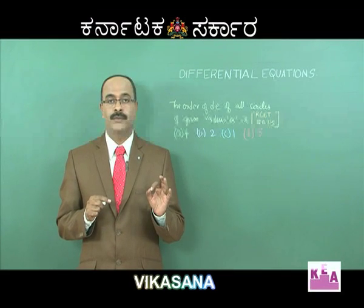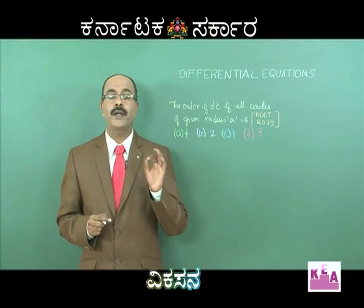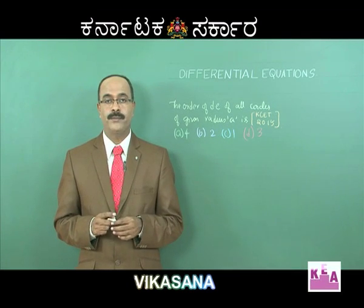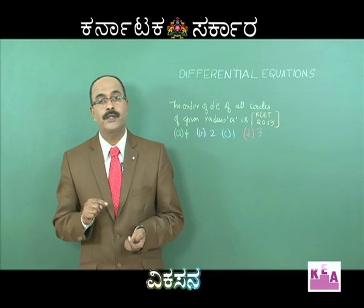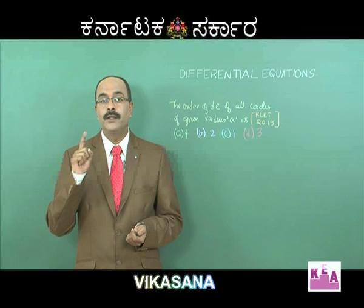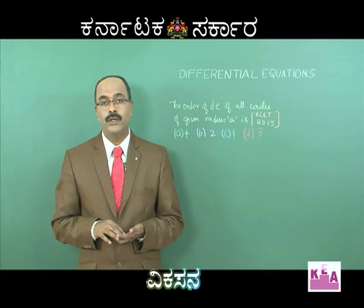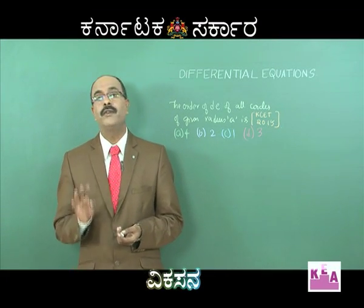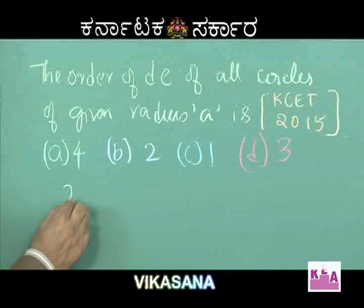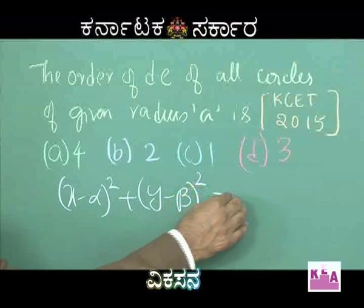Consider the concept of circles. x² + y² = r² represents a circle with center at origin. The general form x² + y² + 2gx + 2fy + c = 0 has center (−g, −f) and radius r = √(g² + f² − c). The form (x − α)² + (y − β)² = a² has center (α, β) and radius a.